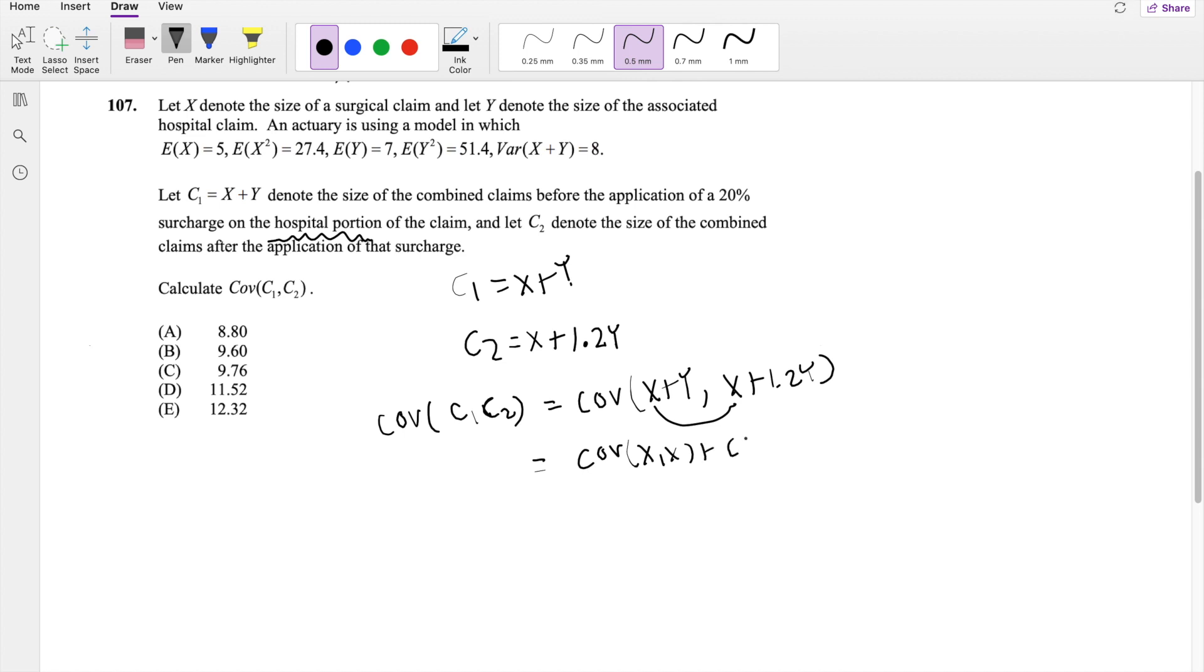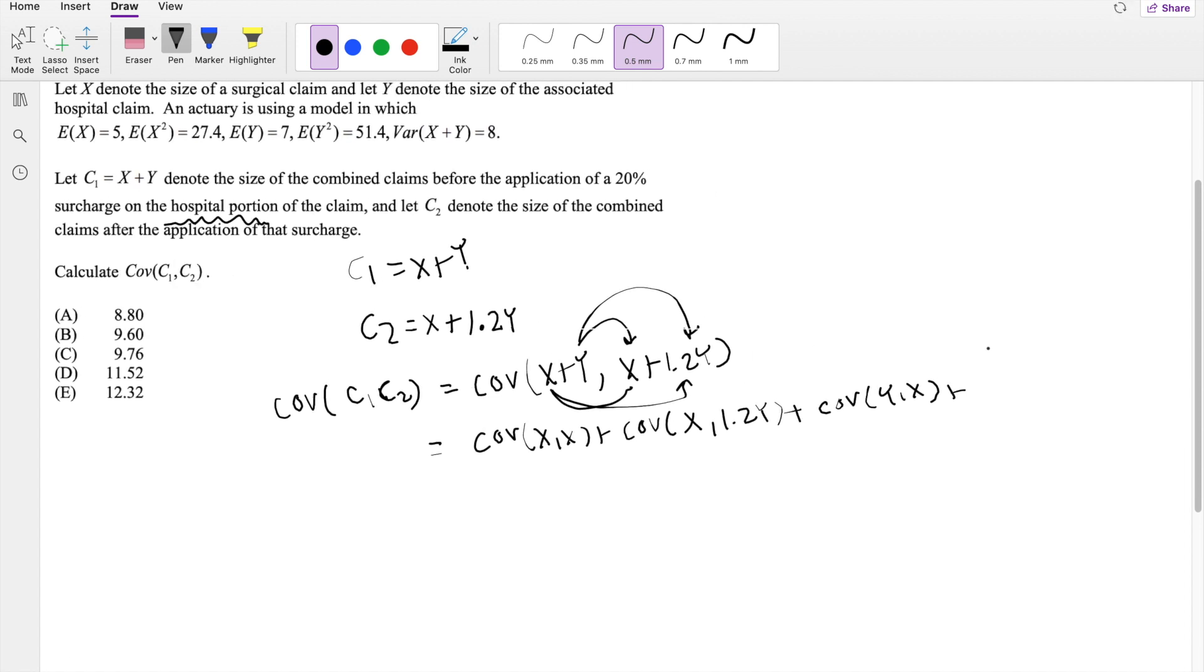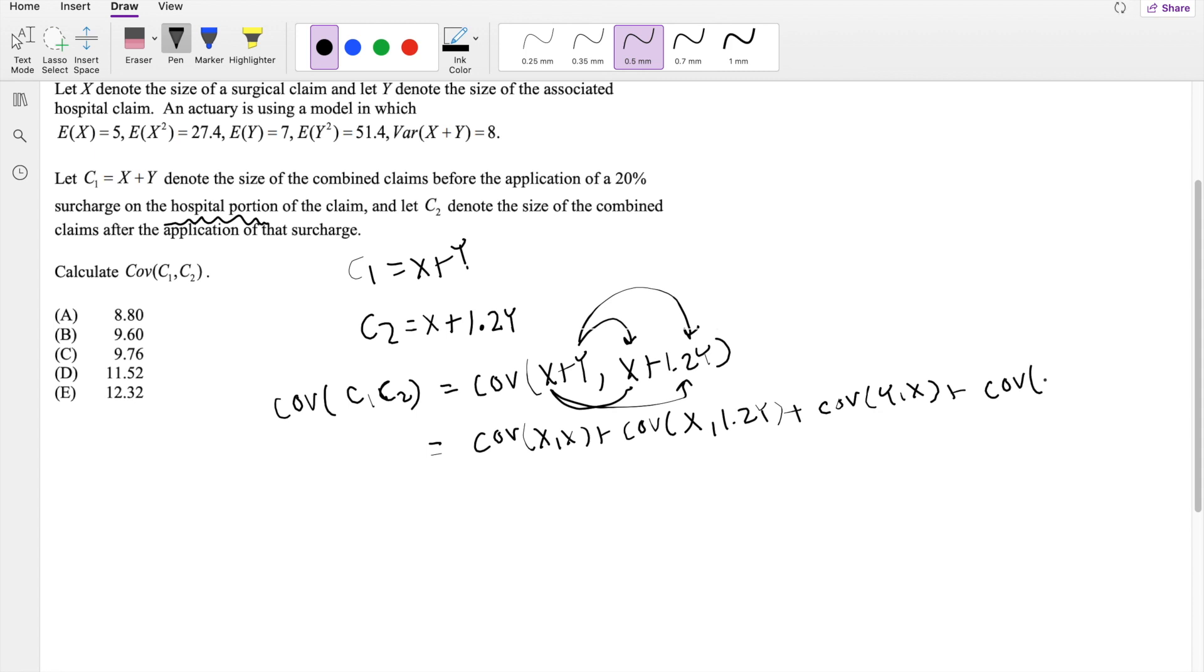And the covariance of X and this second value here, so that's going to be equal to covariance of X and 1.2Y. And then likewise, you can do the same for Y here, so that's going to be covariance of Y and X. And then lastly, that's going to be equal to covariance of Y comma 1.2Y.